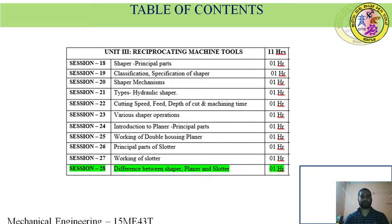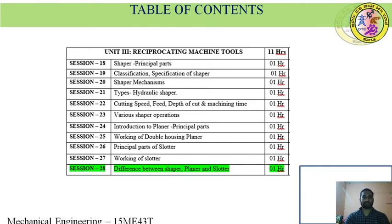Reciprocating machine tools include three machines: shaper, planer, and slotter. The shaper is a reciprocating machine tool in which the ram holding the tool reciprocates over the stationary workpiece in a horizontal direction. The main parts of the shaper are the ram, tool post, clapper box, table, base, guideways, apron, and saddle.